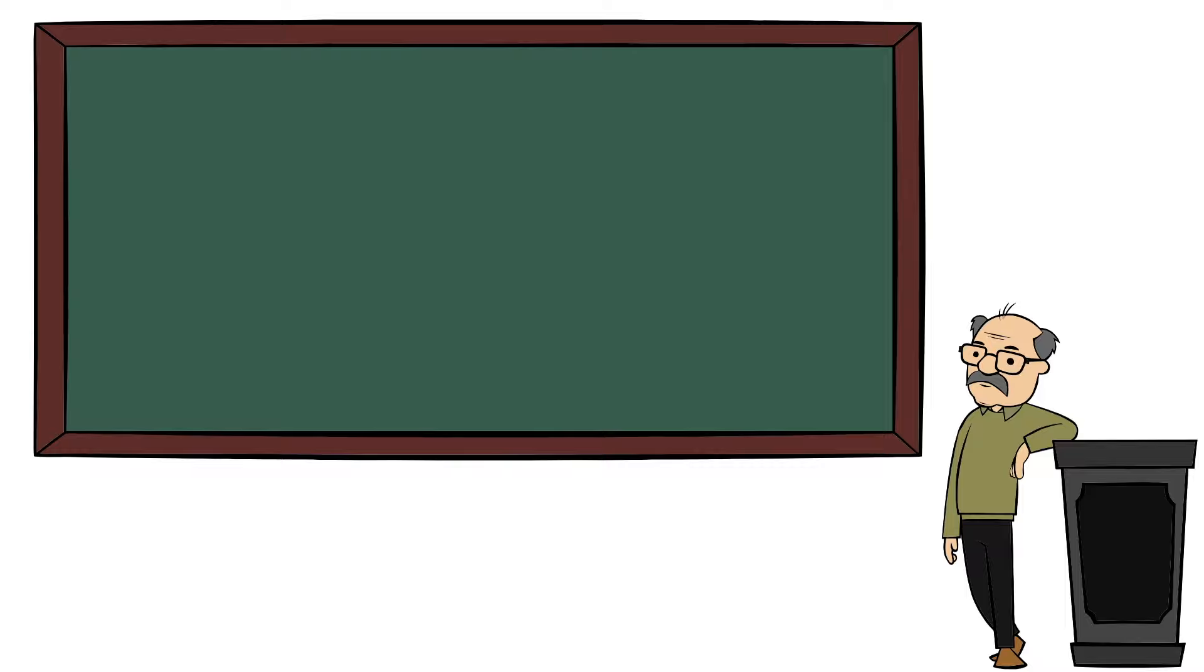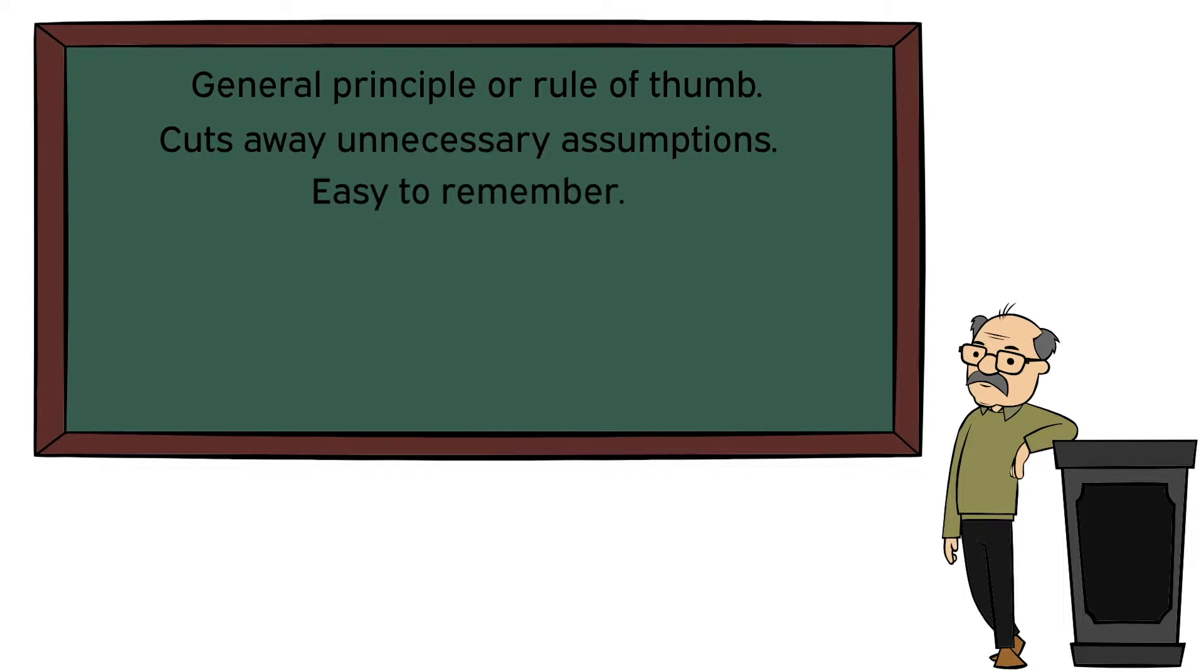So what makes something a philosophical razor? What criteria are there for creating a new philosophical razor? The new philosophical razor should provide a general principle or rule of thumb for making decisions between competing hypotheses or explanations. The razor helps cut away unnecessary assumptions. It should be expressed succinctly in a short phrase that is easy to remember and apply. Many well-known razors are only a few words long.